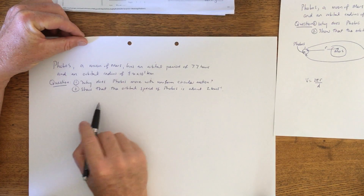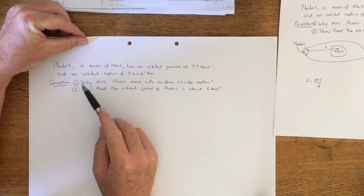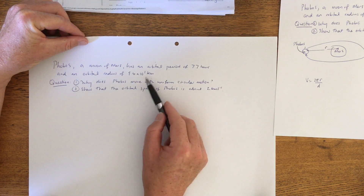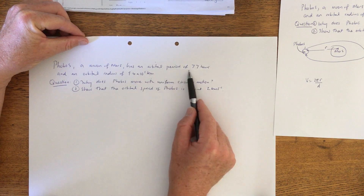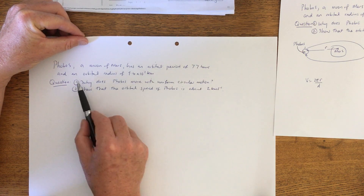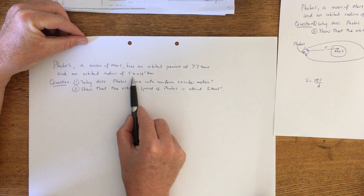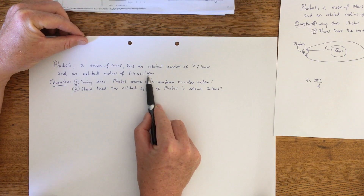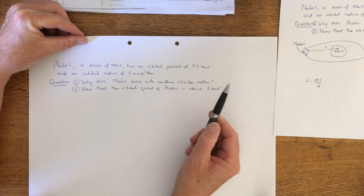Hi there. So we've got a question. Phobos, a moon of Mars, has an orbital period of 7.7 hours and an orbital radius of 9.4 times 10 to the 3 kilometers.